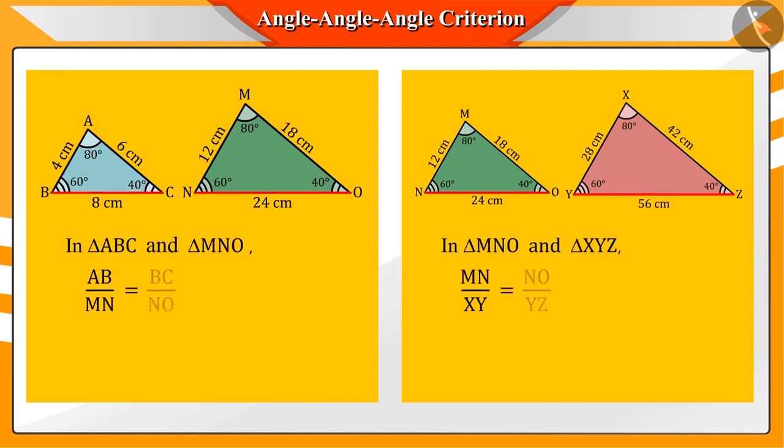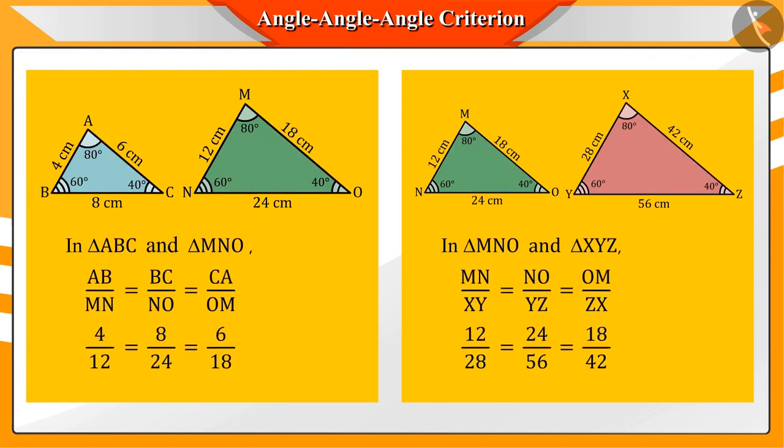In this way, if we take any two similar triangles, then we see that their corresponding sides are proportional.